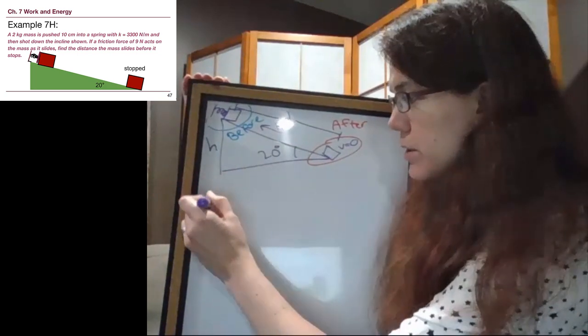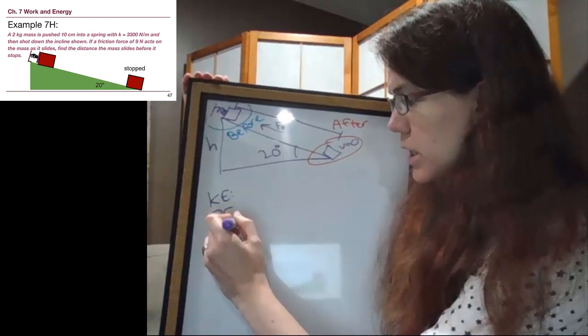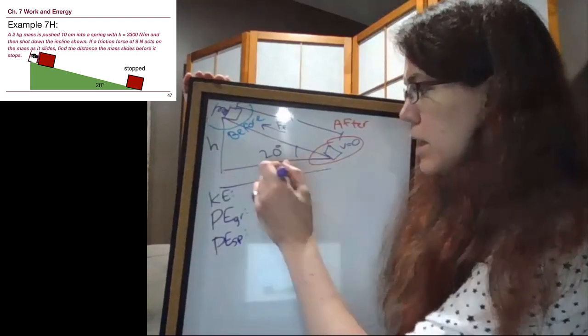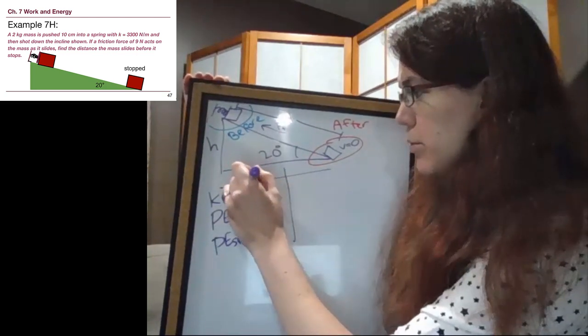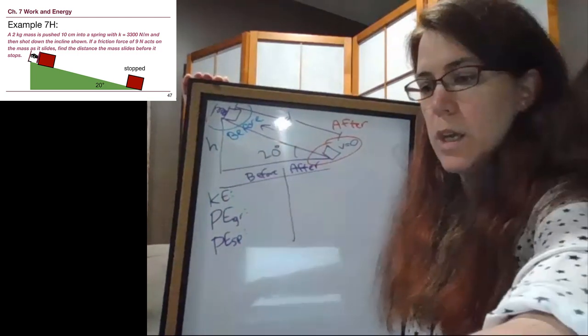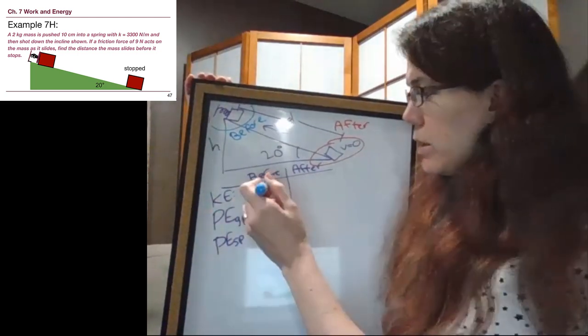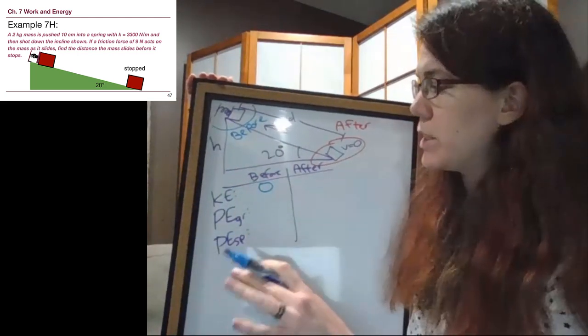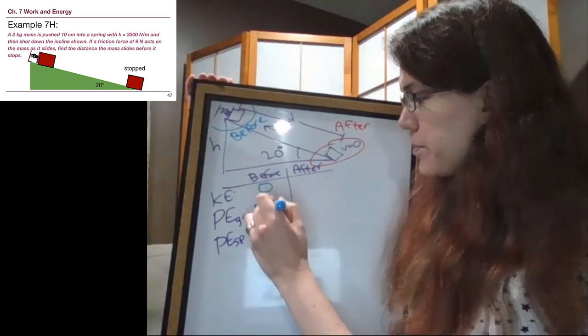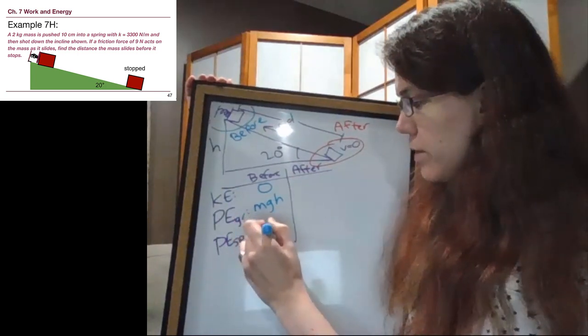This situation at the top is our before, where we're pushed into a spring but not yet moving. This situation at the bottom is our after, where the block has stopped moving and is no longer attached to a spring. We have our standard before and after questions: kinetic energy, potential energy from gravity, potential energy from the spring, and whether that's showing up in the before or after situation. Are we moving at the start? No, we are pushed into a spring about to be released but not yet moving. Are we higher at the start? Yes we are, we are at the top of the ramp. Is there a spring at the start? Yes there is, so we can write one half k x squared.